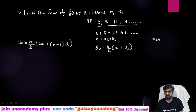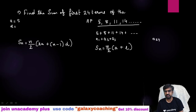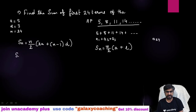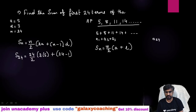First of all, you need to find out a, d, and n from the given question and make a list. So in this question, a — the first term — is 5. The difference is 8 minus 5 = 3, and you can see a positive common difference. Now you need to find the sum of 24 terms, so n = 24. Now directly keep these values inside the formula. So S24 = 24/2 × (2×5 + (24−1)×3).